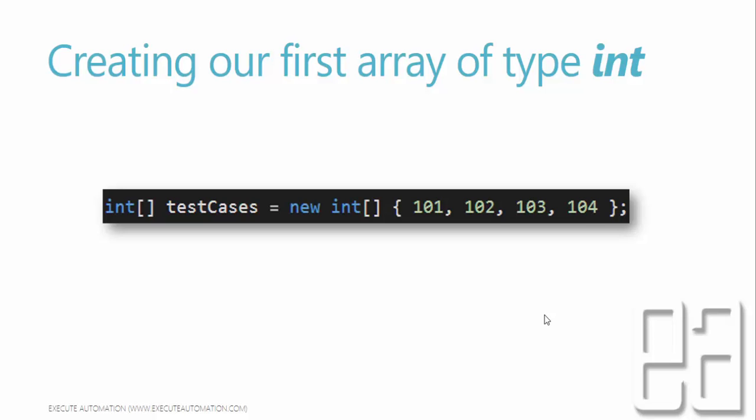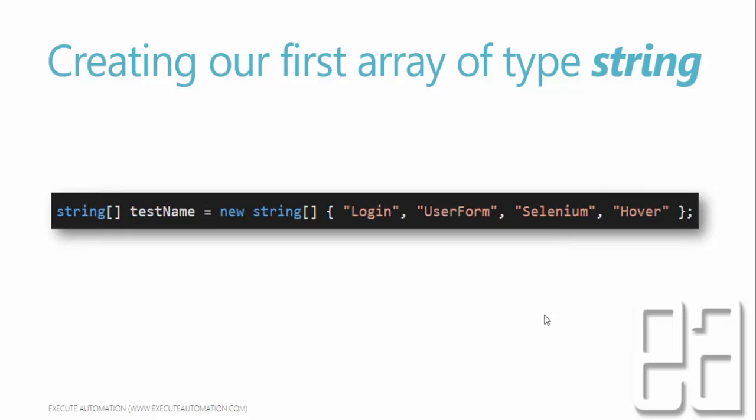If you want to create a string array, it's going to look something like this: string[] testCaseNames = new string[] { "login", "userForm", "selenium", "hover" }. So it's going to hold all the test names in this array.